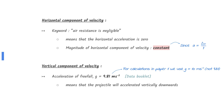Next, the vertical components of velocity. Gravitational force acts downwards on the projectile, causing the projectile to accelerate downwards. This means that the magnitude of vertical components of velocity increases.